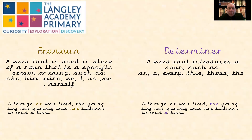In particular, I just wanted to mention pronouns and determiners. These are little words, and they are regularly just little words, but they help the reader understand what is going on in a story or in a piece of writing. The pronoun — these are words that we use to replace the noun. A word that is used in place of a noun that is a specific person or thing, such as she, him, mine, we, I, us, me, herself, and so on. They just allow us not to constantly keep repeating the same noun word.